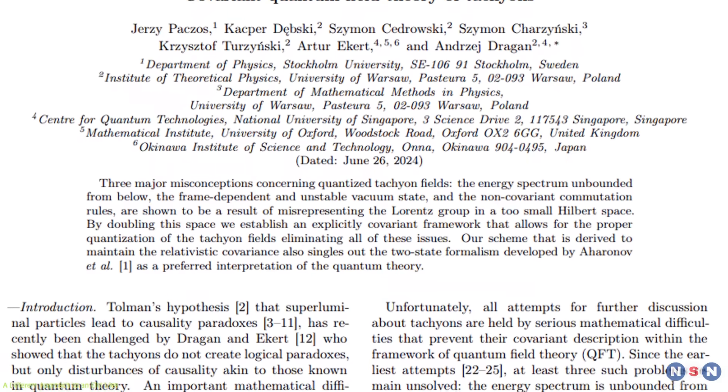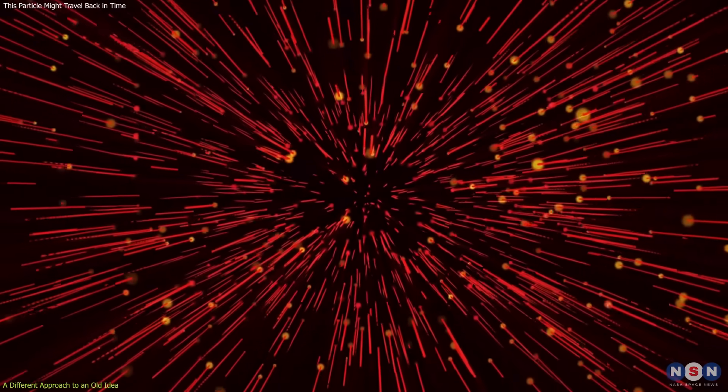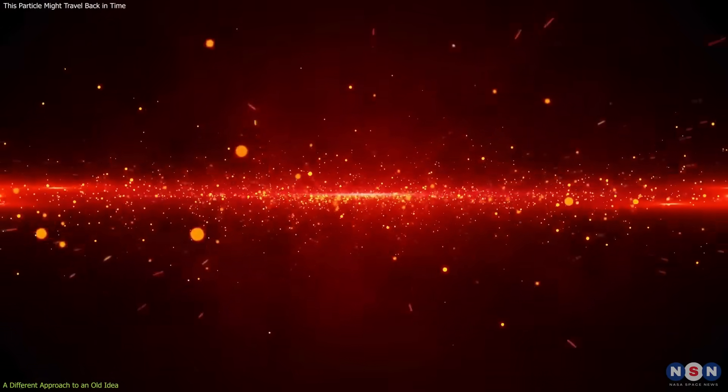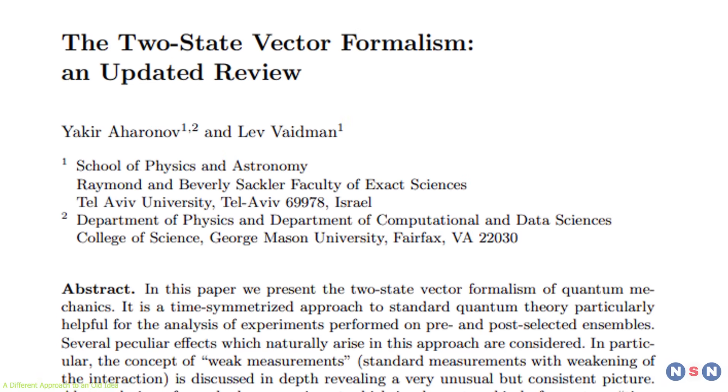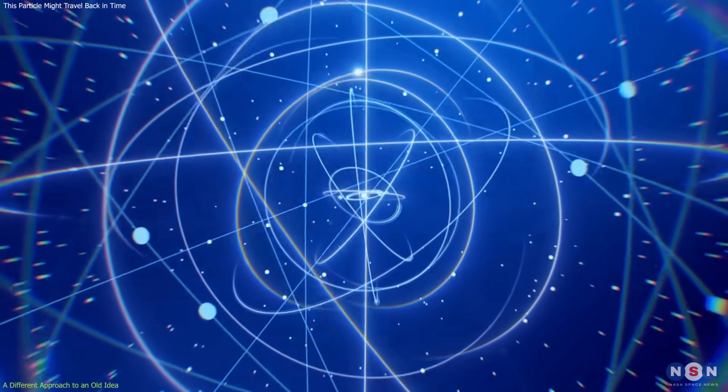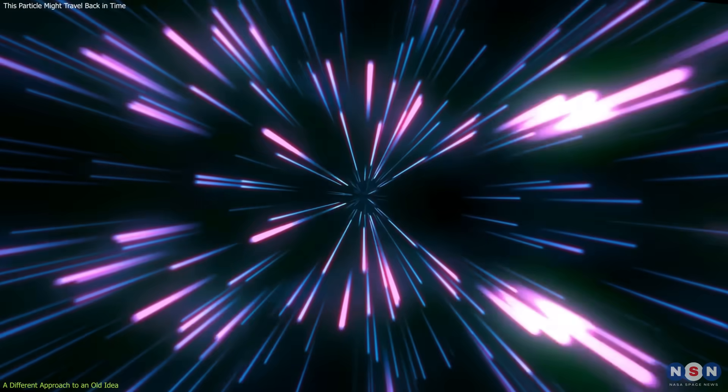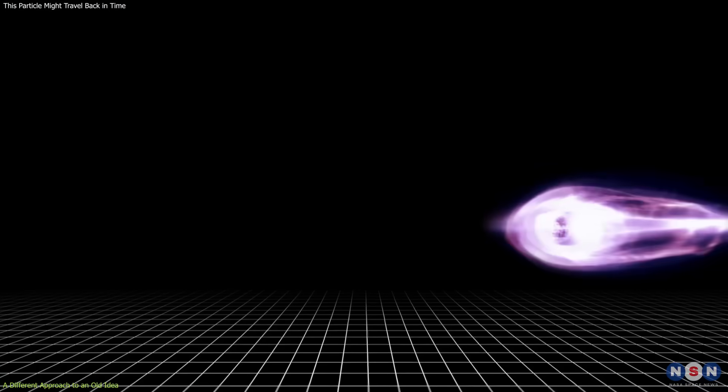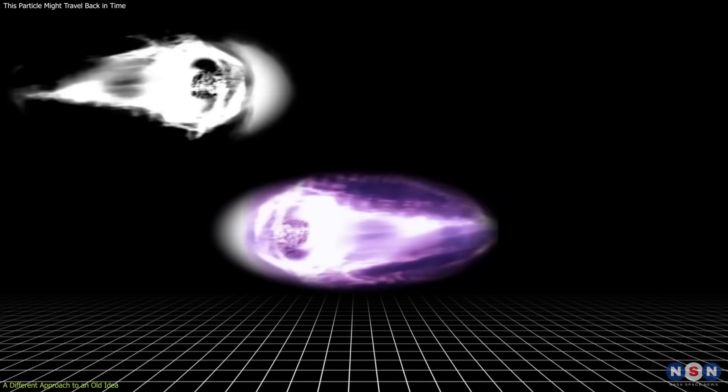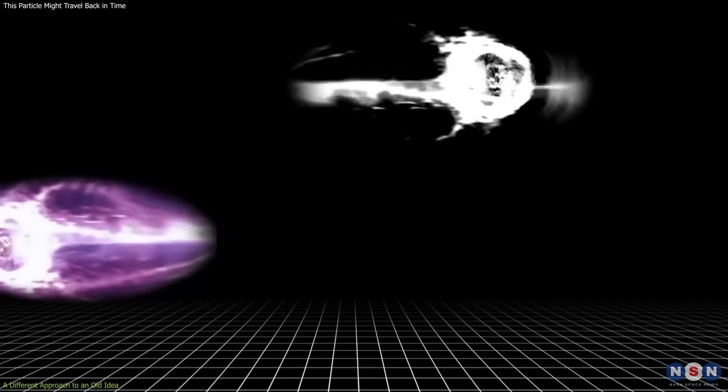But in this new study, the authors revisit the question with more advanced tools. Their key innovation is incorporating both initial and final conditions into the system, something known as two-state vector formalism, a concept used in certain interpretations of quantum mechanics. The model treats particles as time-bounded at both ends, avoiding contradictions. A backward-moving tachyon in one frame is a forward-moving anti-tachyon in another, consistent with special relativity and free of unphysical assumptions.